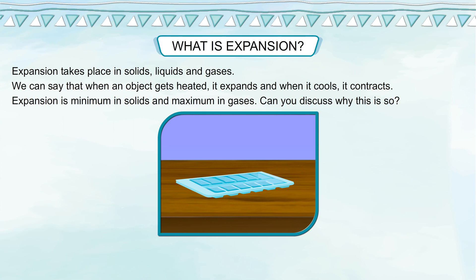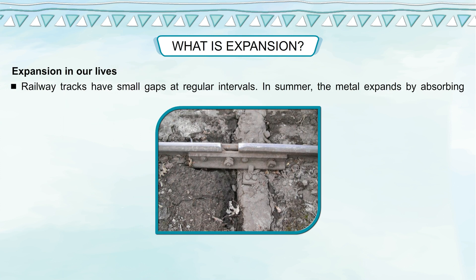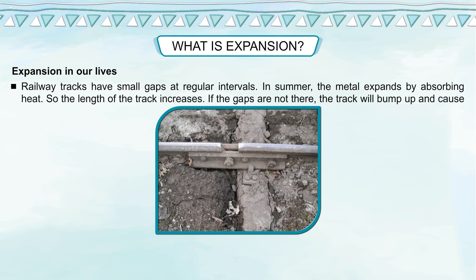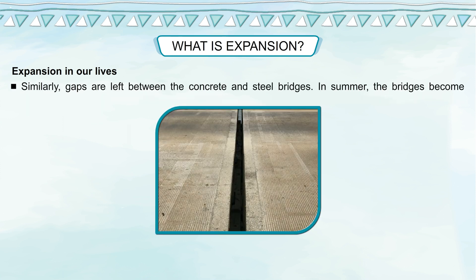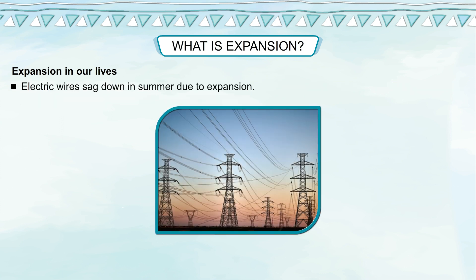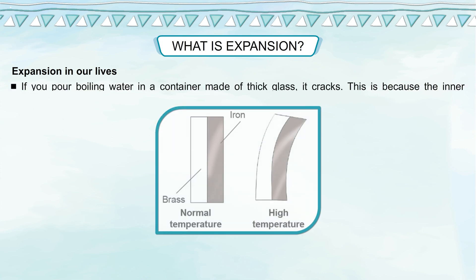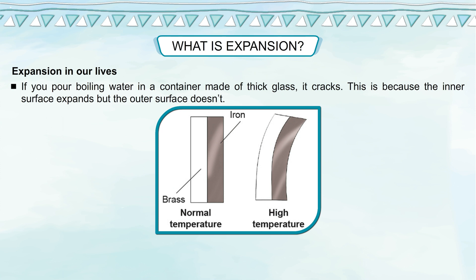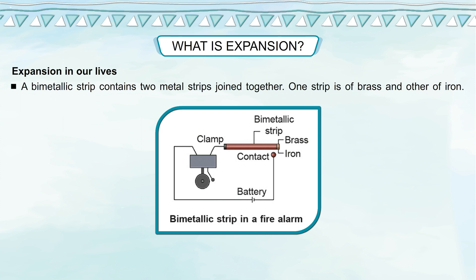Expansion in our lives: Railway tracks have small gaps at regular intervals. In summer, the metal expands by absorbing heat, so the length of the track increases — if the gaps are not there, the track will buckle up and cause accidents. Similarly, gaps are left between concrete and steel bridges. In summer, bridges become longer due to expansion; in winter, they contract. Electric wires sag down in summer due to expansion. If you pour boiling water in a container made of thick glass, it cracks because the inner surface expands but the outer surface does not.